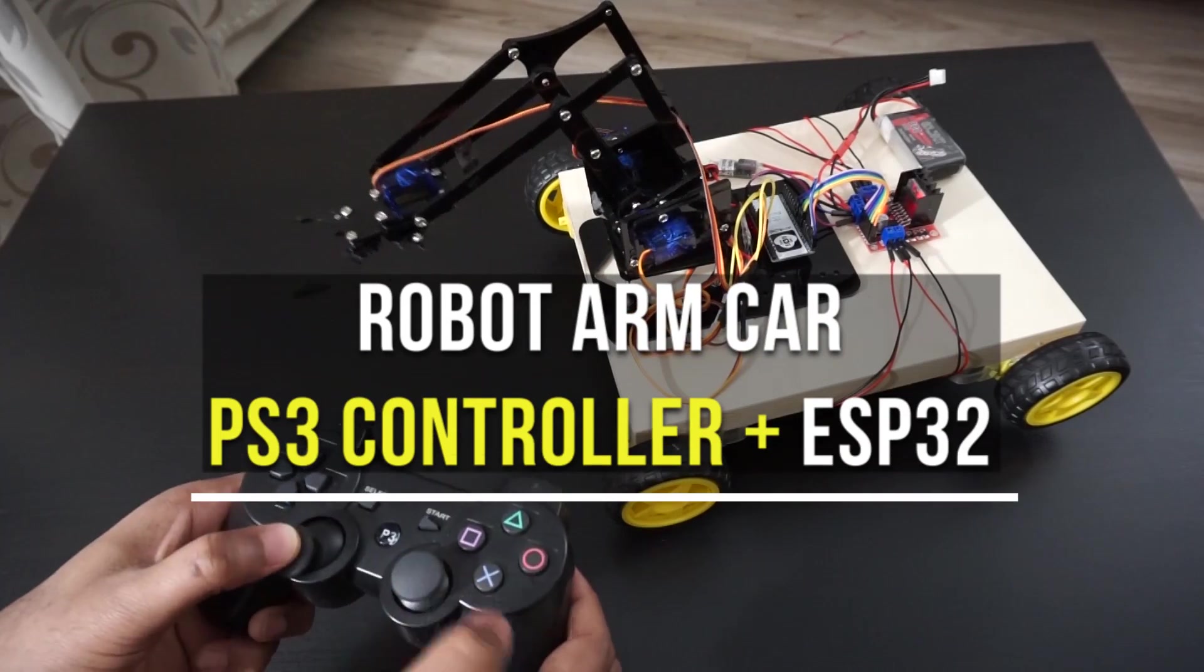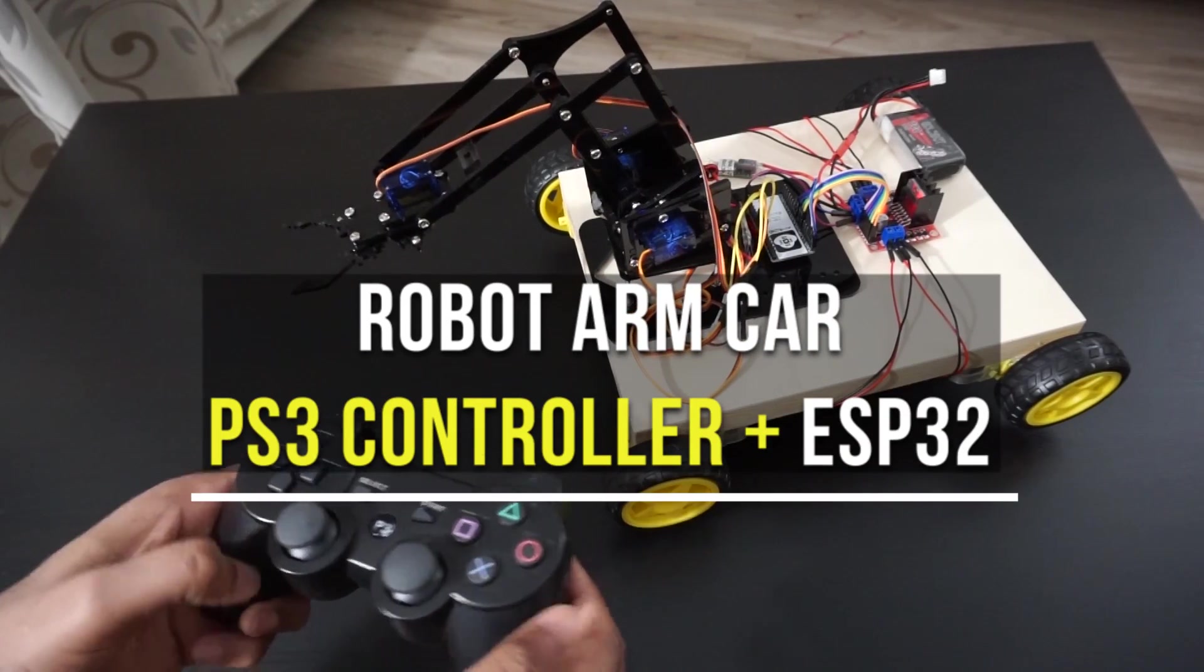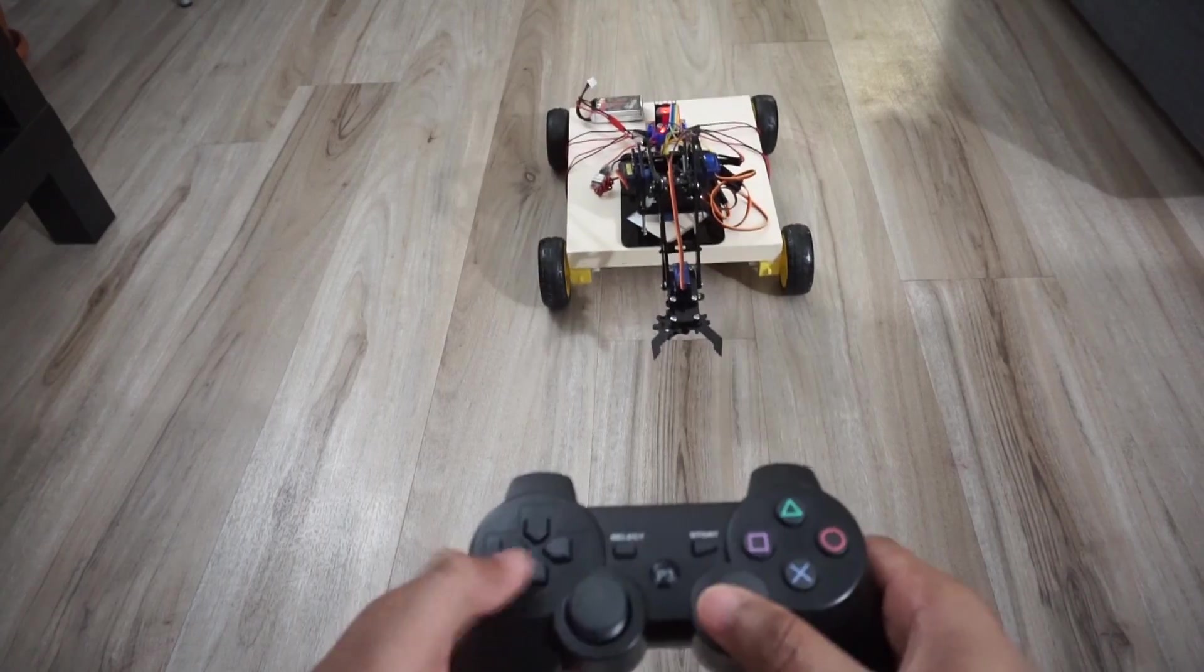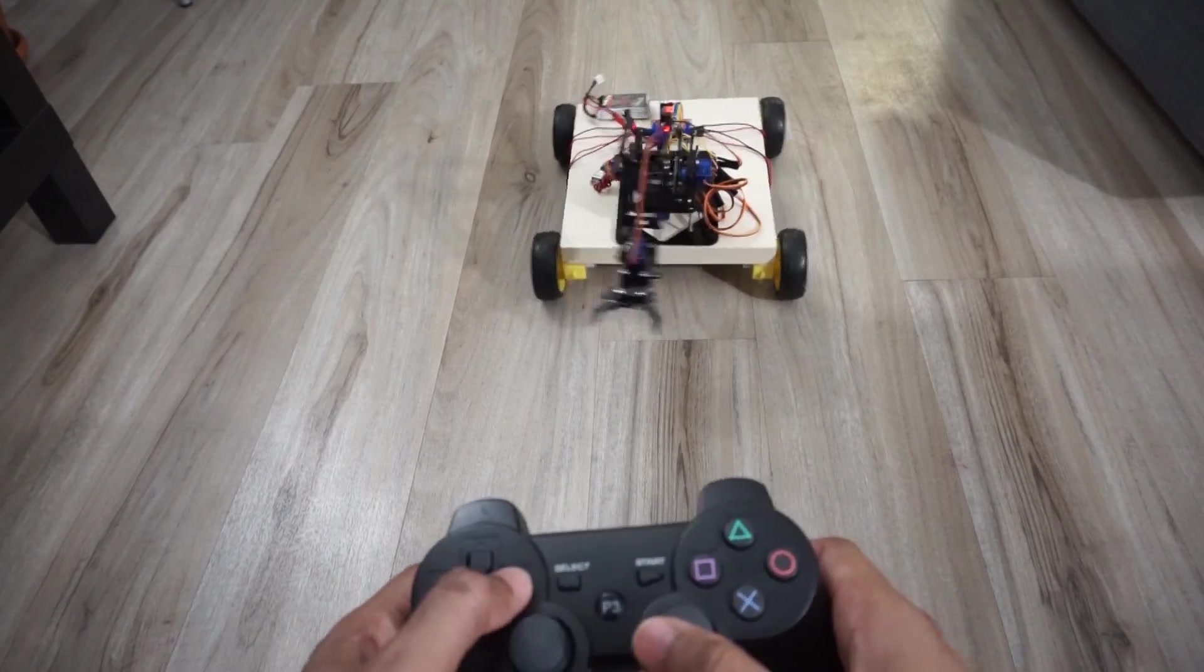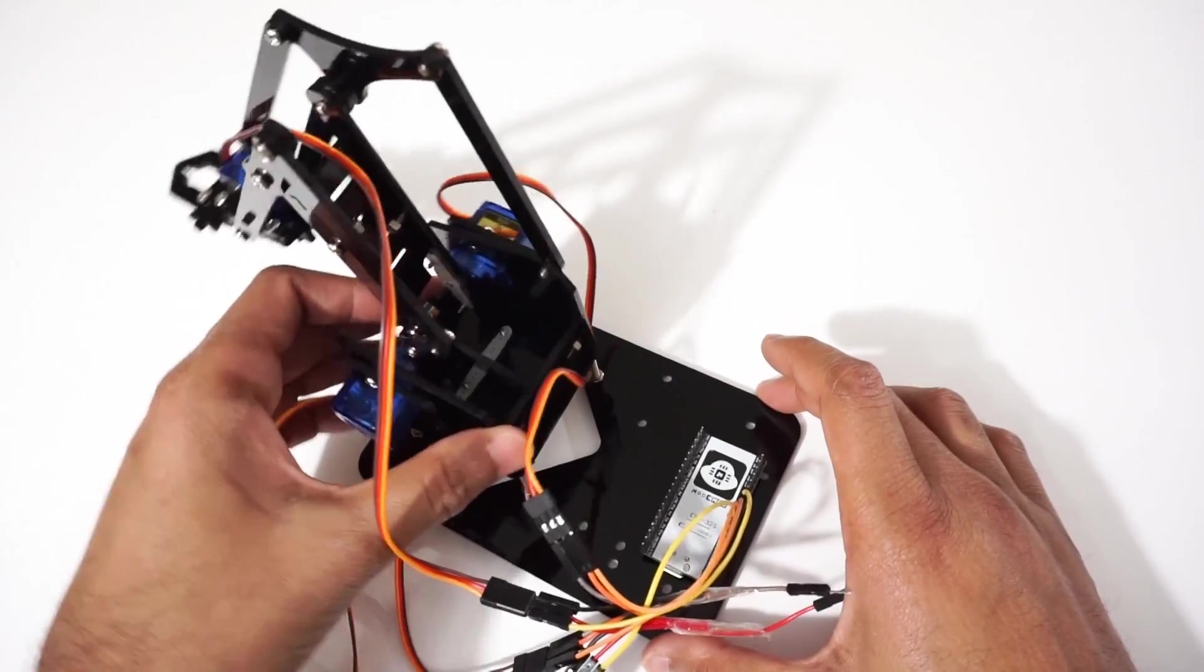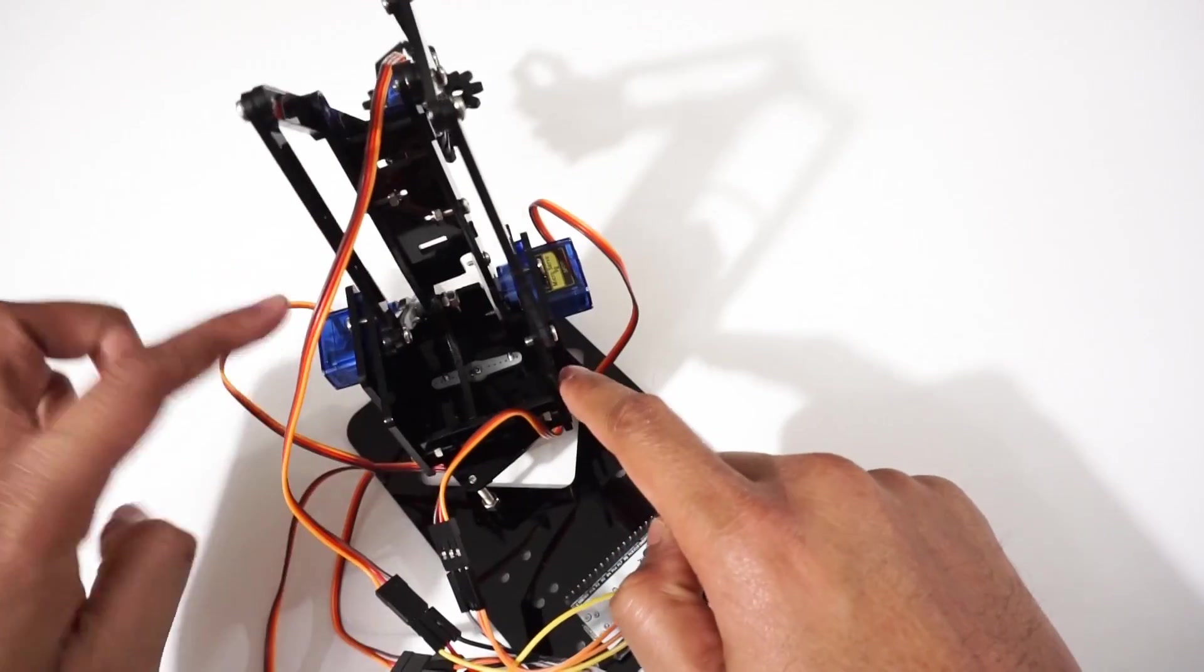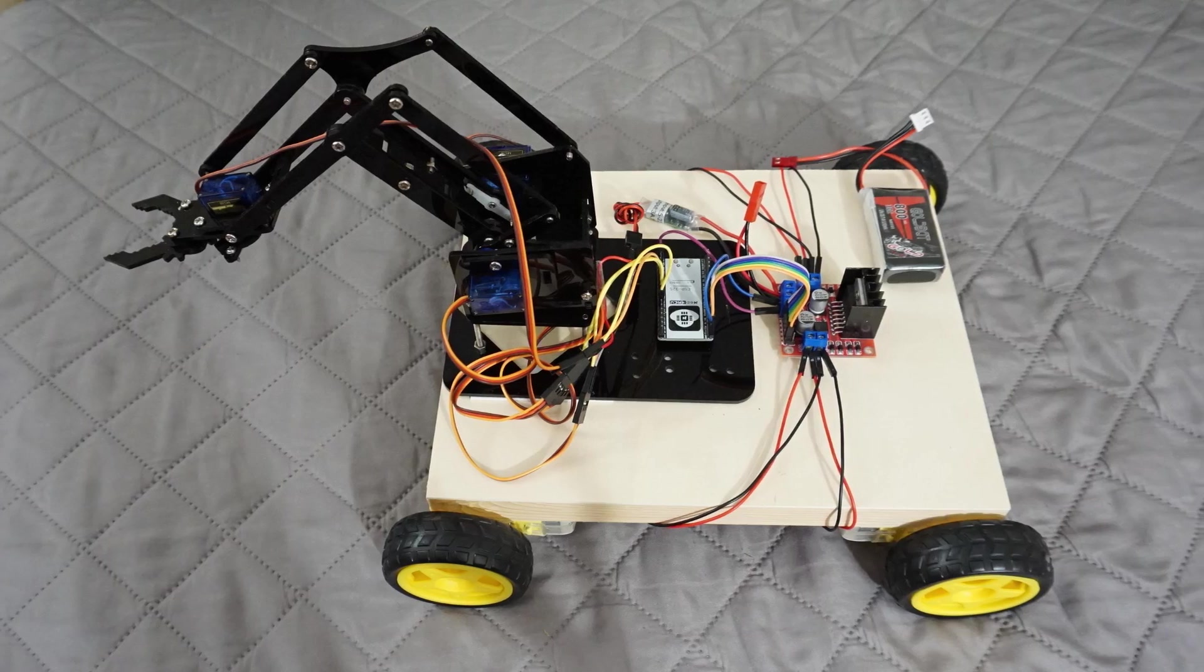we are going to make RoboArm car and control it using PS3 controller and ESP32 module. We will pair the PS3 controller with ESP32 module and send the commands to control the RoboArm car. We will control the movements of RoboArm using servo motors. So let's get started and make this RoboArm car.